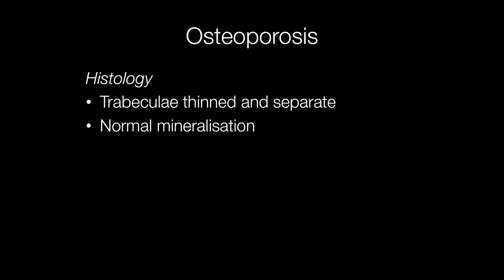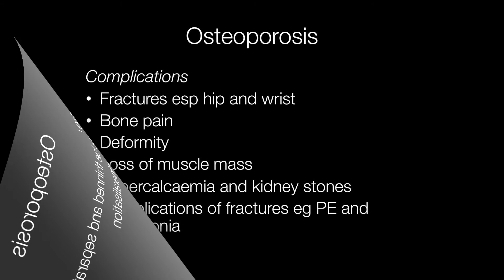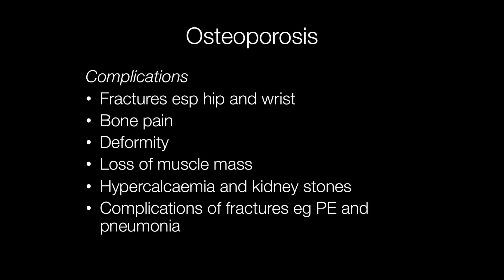The histological changes in osteoporosis are thinned and separated bony trabeculae showing normal mineralisation. Complications of osteoporosis obviously include fractures, especially those of the hips, wrists and vertebrae, bone pain, deformities from the fractures, and loss of muscle mass.